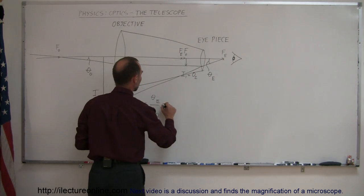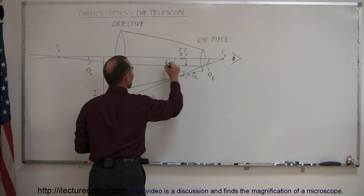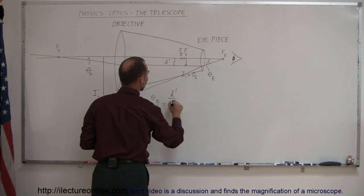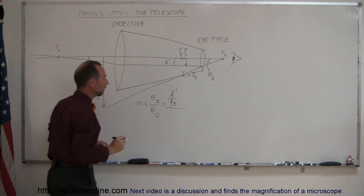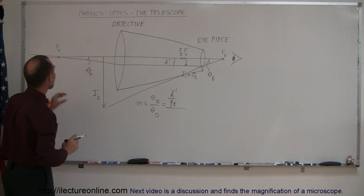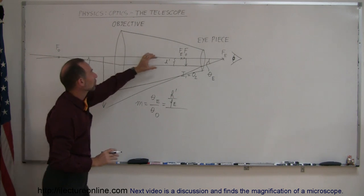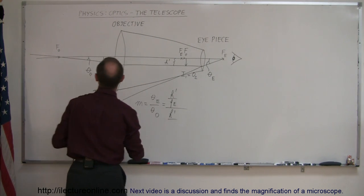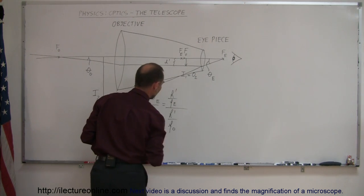This is equal to the height of the image — let's call it h prime — divided by the focal length of the eyepiece, f sub e. We divide that by the angular size of the object, which is h prime divided by the focal length of the objective lens, f sub o.